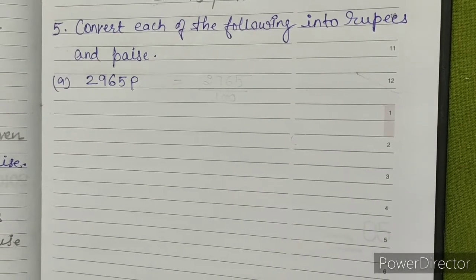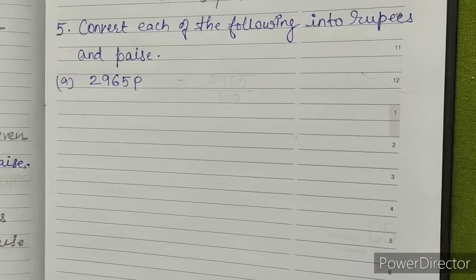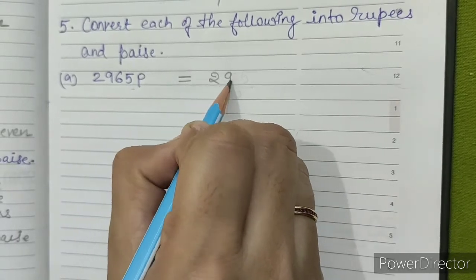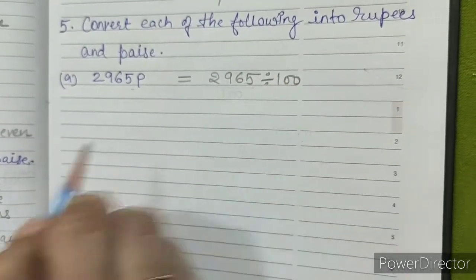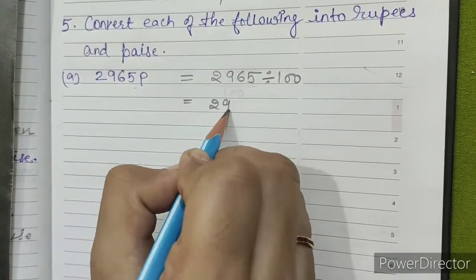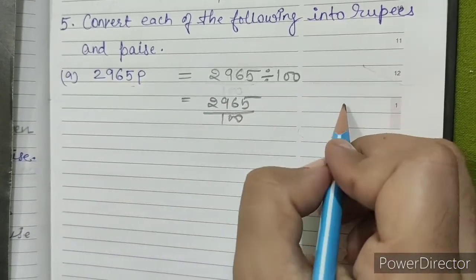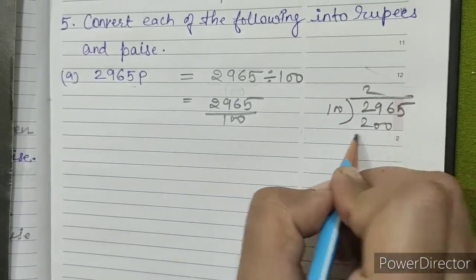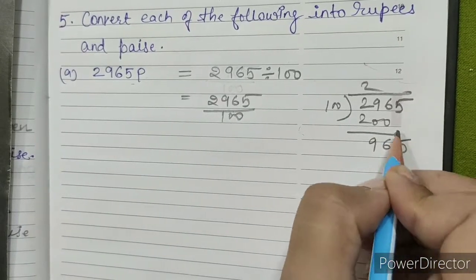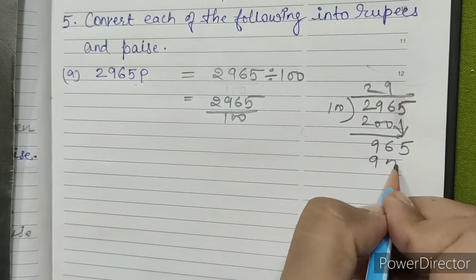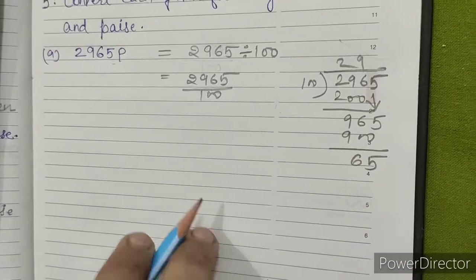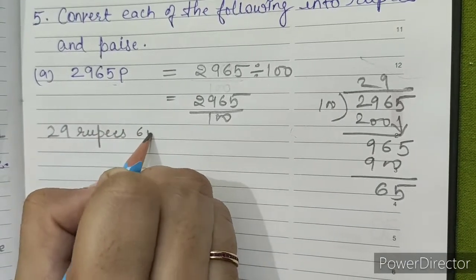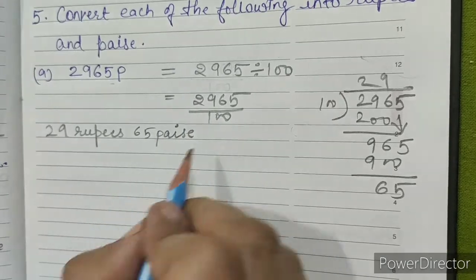Question number 5: convert each of the following into rupees and paise. A. 2965 paise. Now we'll convert this paise into rupees: 2965 ÷ 100. Dividing, we get 29 rupees and 65 paise. This is our answer.